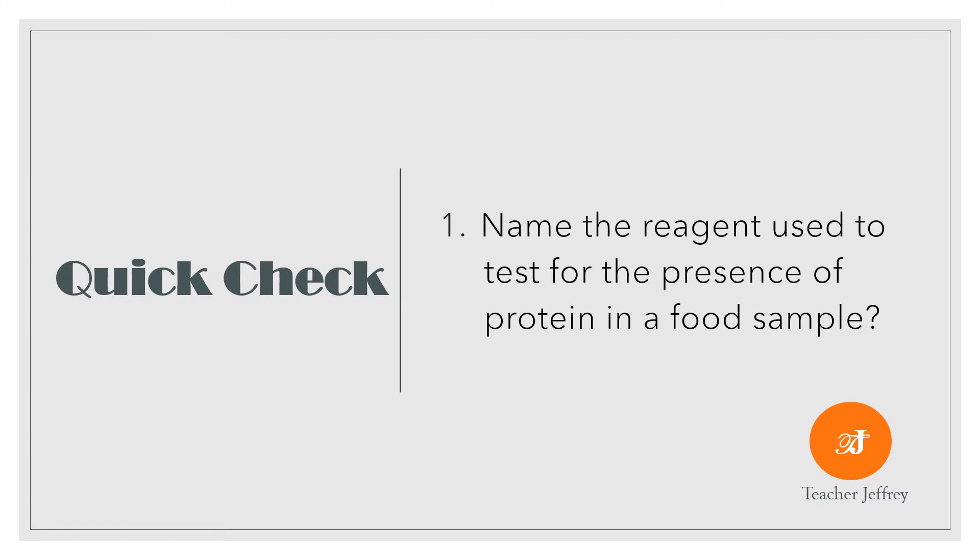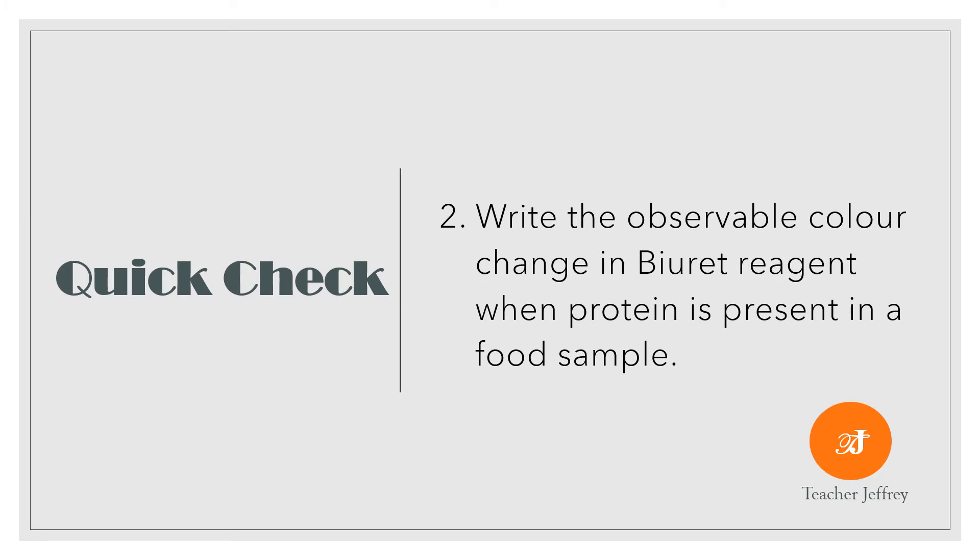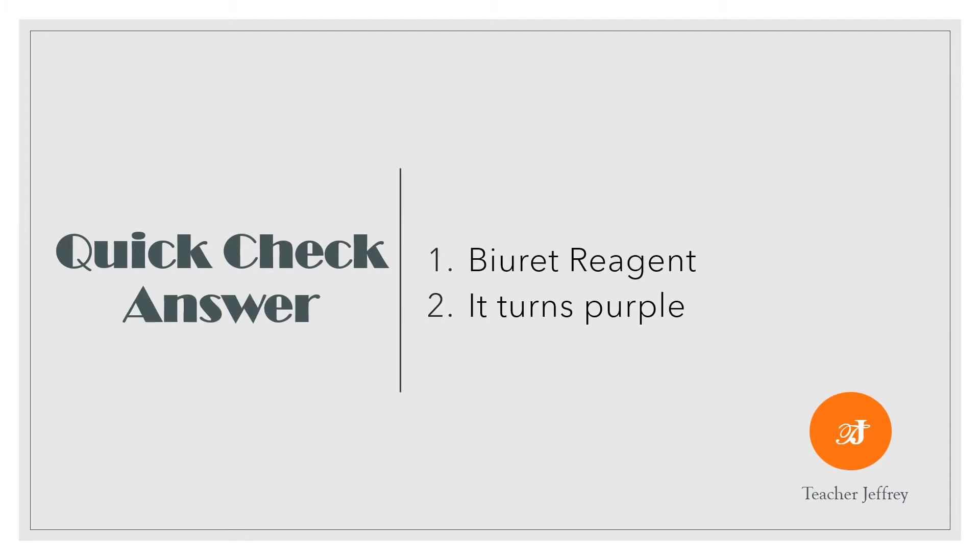Let us check our knowledge. Number 1: Name the reagent used to test the presence of protein in a food sample. Number 2: Write observable color change in Biuret reagent when protein is present in a food sample. These are the answers for our quick check. For number 1, it is Biuret reagent. For number 2, it turns purple. If food contains protein, it will turn purple in Biuret reagent.